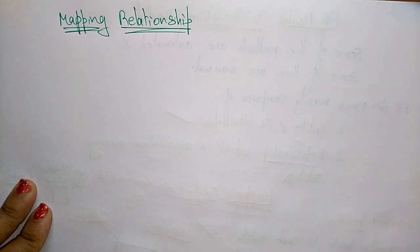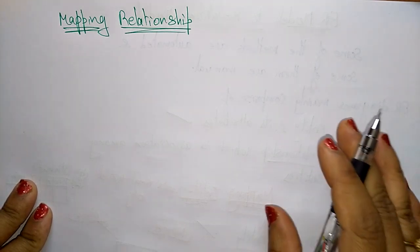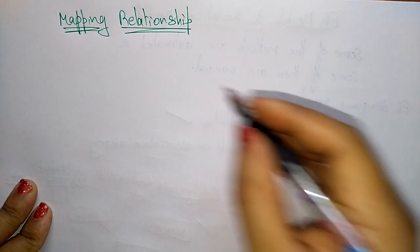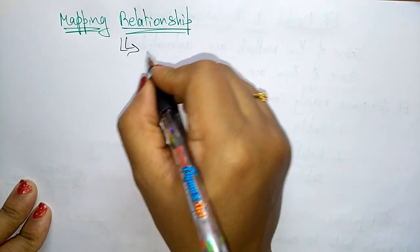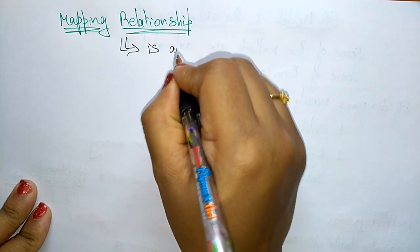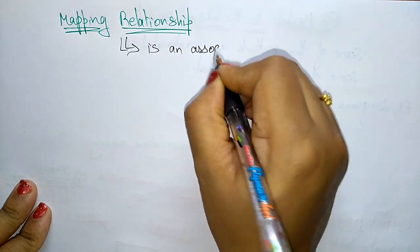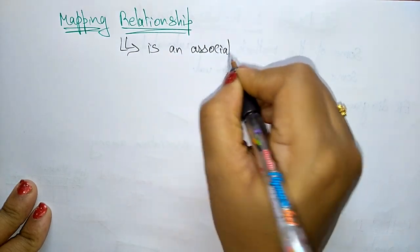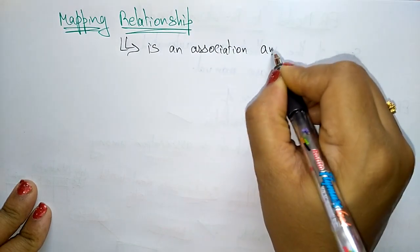So, what is the mapping relationship? Actually, a relationship is nothing but it is an association among entities.